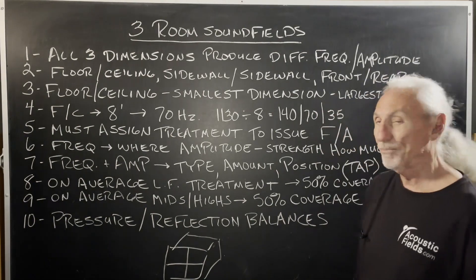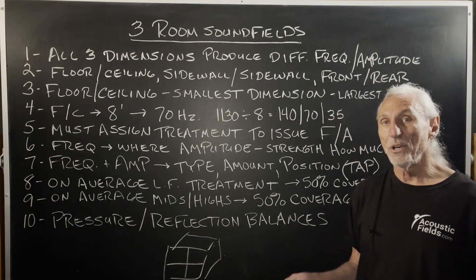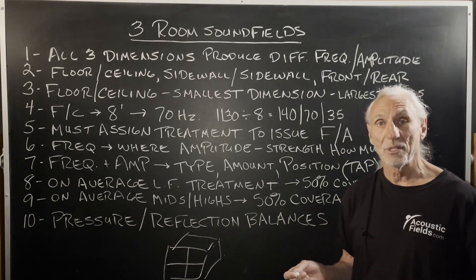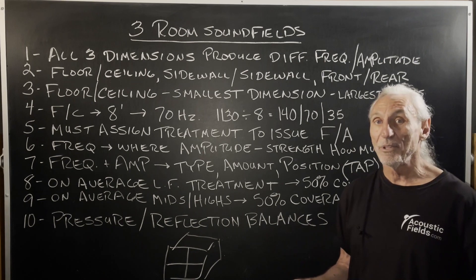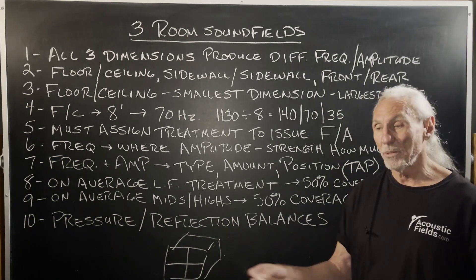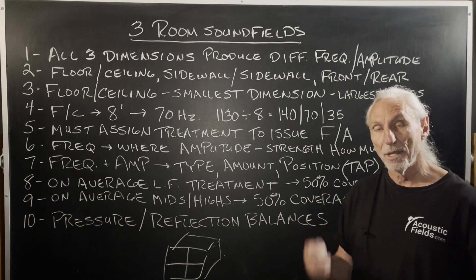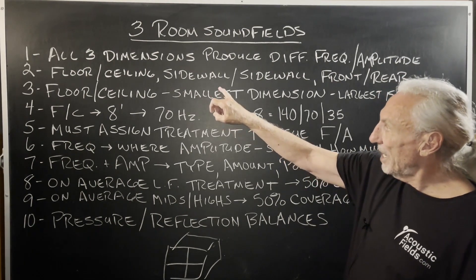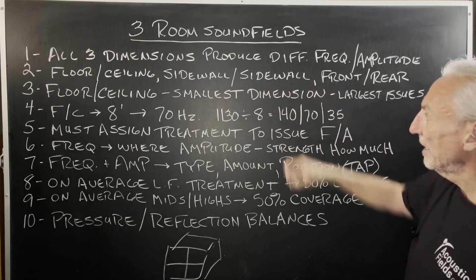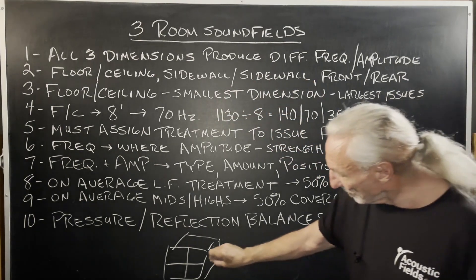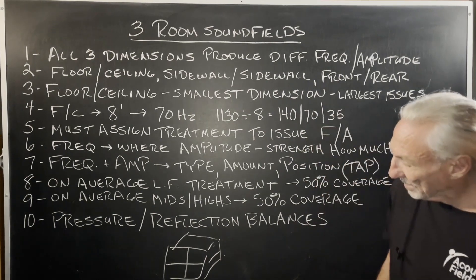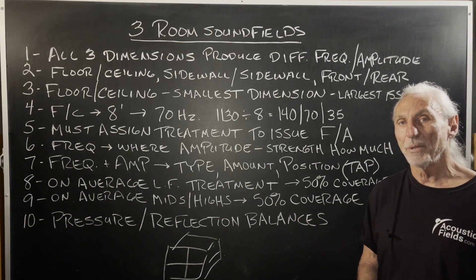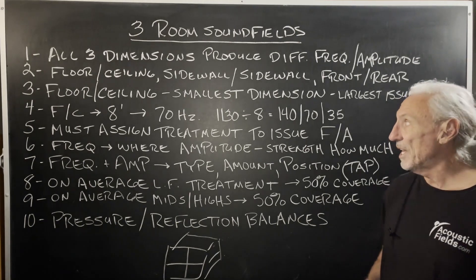And guess what? They're all different dimensions. We know from past videos that different dimensions produce different frequency and different amplitude — strength — issues. Frequency is where it lies on our hearing spectrum. So we have side wall to side wall, floor to ceiling, and front to rear. We have all of these fields to take into consideration, and they're all different. I think this is what causes the complication in understanding acoustics.